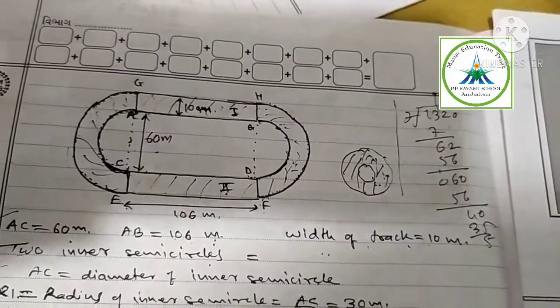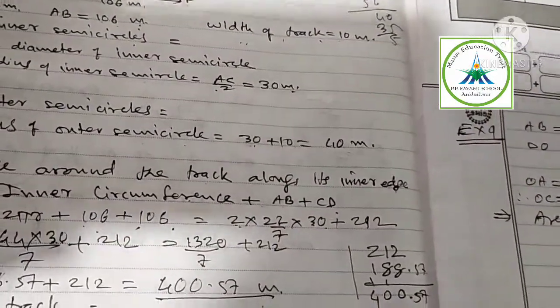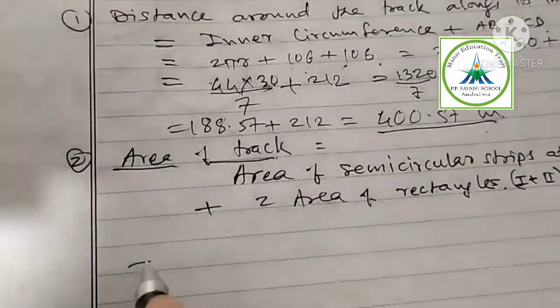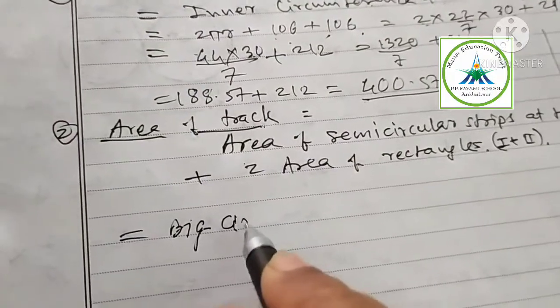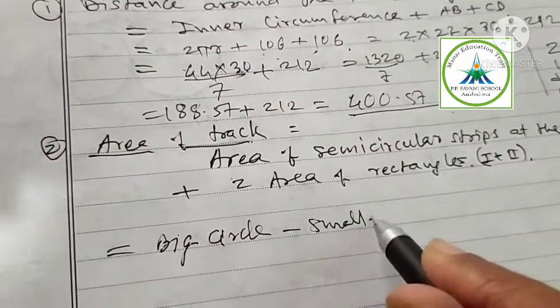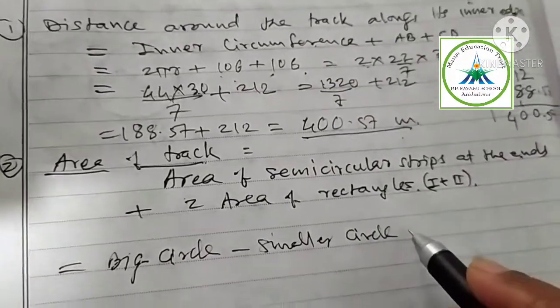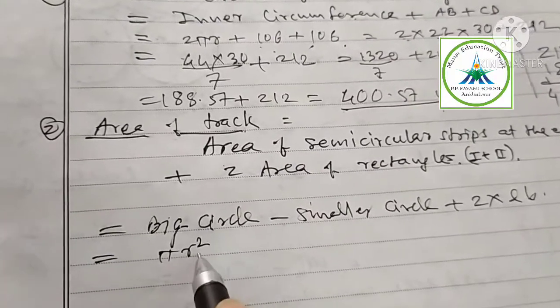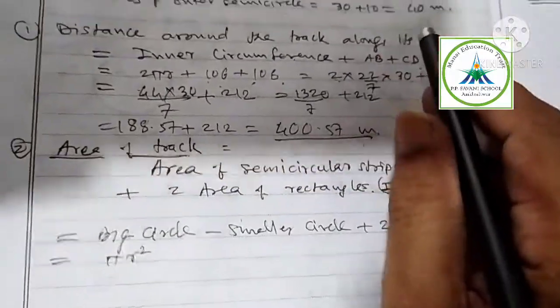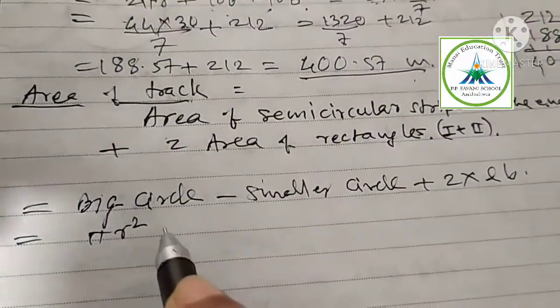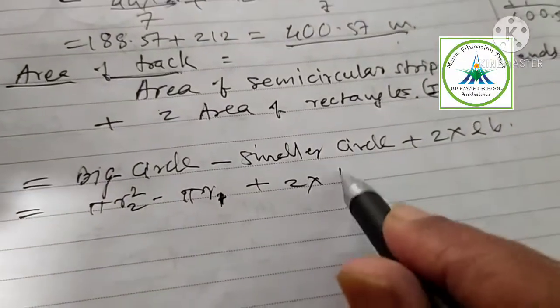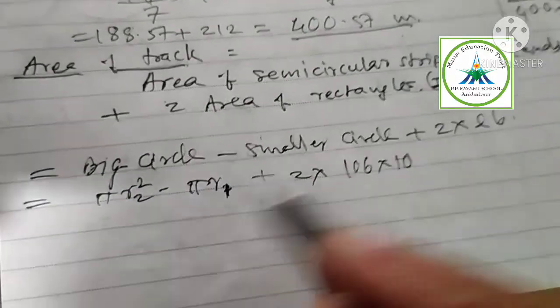Area of semi-circular strips at the ends. Area of semi-circular strip at the end is bigger circle minus smaller circle. That is equal to bigger circle minus smaller circle plus two times area of the rectangle, length into breadth. Bigger circle is pi R square. Outer radius, how much is outer radius? 40. Outer radius is 40 square, minus pi R1 square, inner. We give R1 for inner and R2 for outer. Plus two times, length is 106 multiplied by breadth 10.